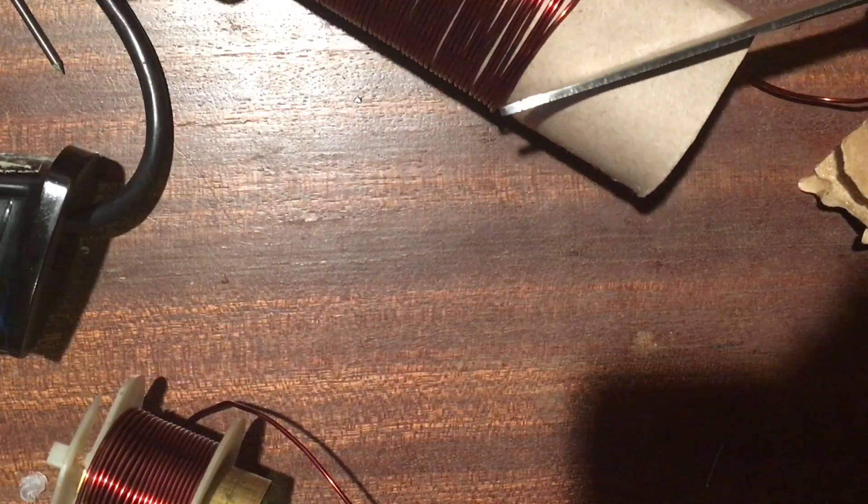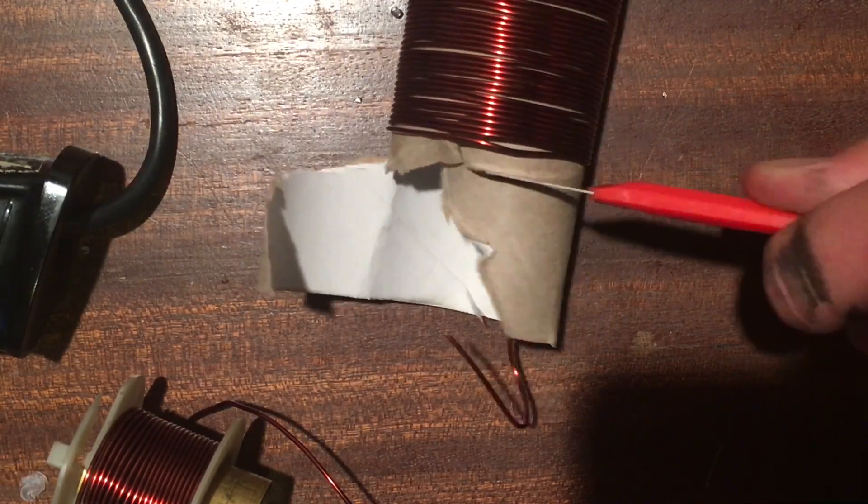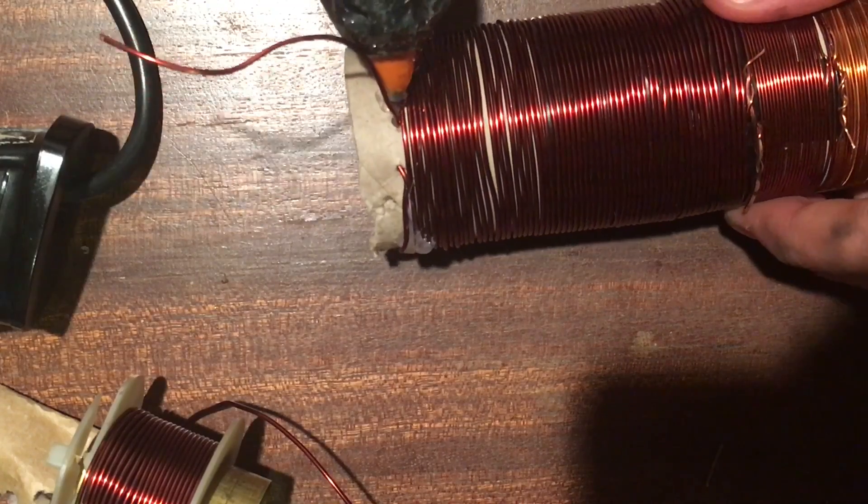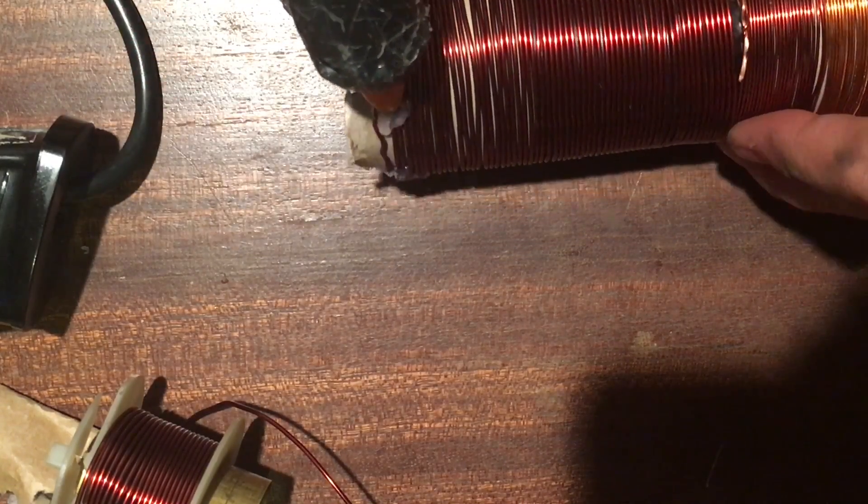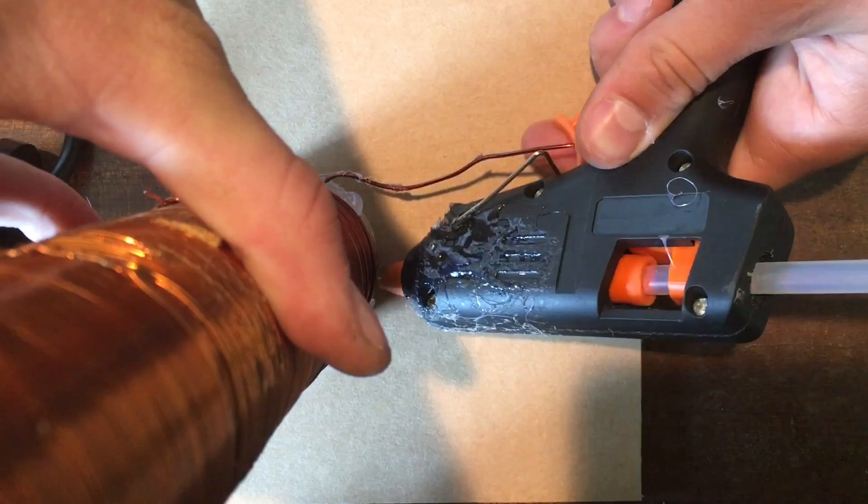When you finish that, chop off the excess cardboard and secure the wire with hot glue. Glue the secondary coil down to a base which could be wood or cardboard.